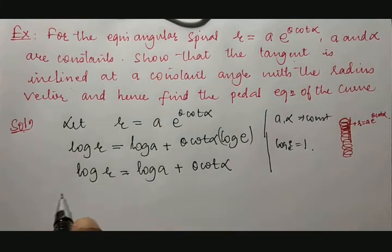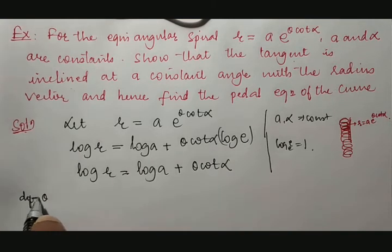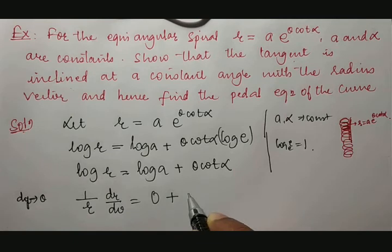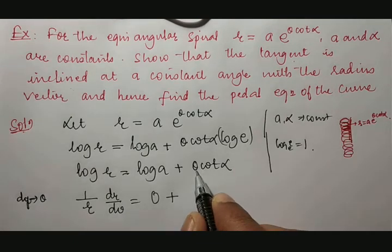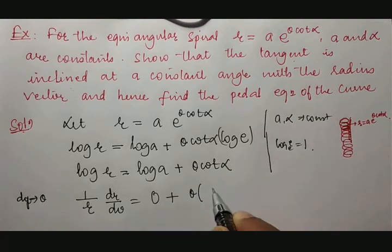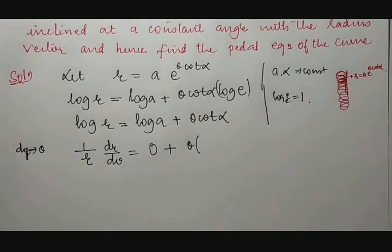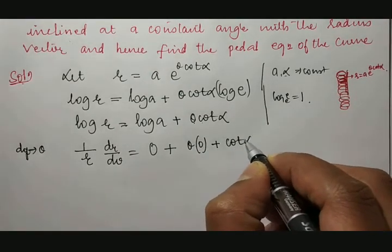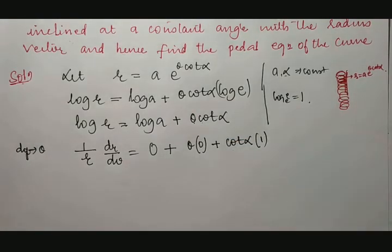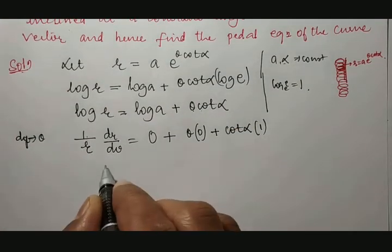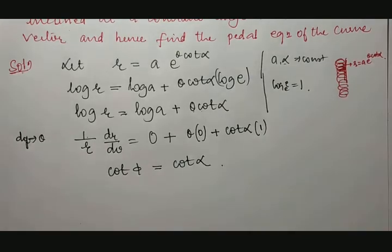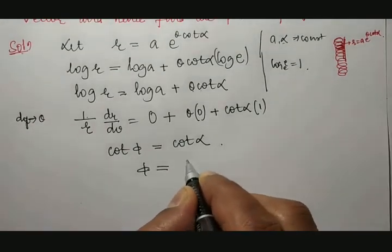Then, differentiating with respect to theta: differentiation of log r gives 1 by r into dr by d theta, which equals cot alpha. Keeping cot alpha common, differentiation of theta is 1. Therefore, 1 by r into dr by d theta equals cot alpha. Hence cot ψ equals cot alpha, so ψ is equal to alpha.